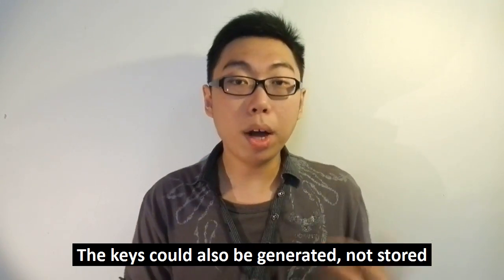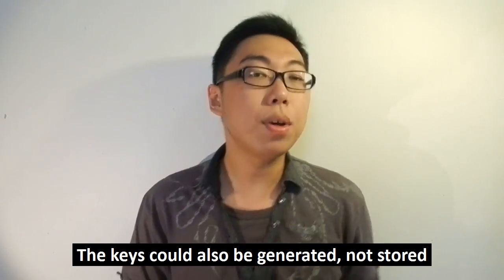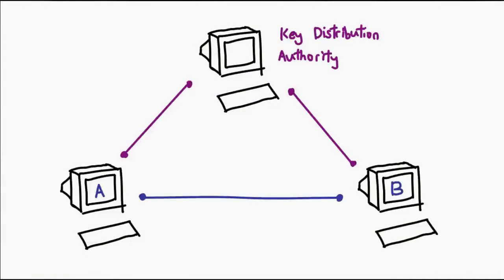Now let's consider some challenges of actually implementing this, first addressing the elephant in the room: how do you convey the key from one point to another? In our example, point A and point B already know what the key is. However, speaking practically, this information also needs to be conveyed somehow. One proposed solution is to have a key distribution center — a trusted party that stores all the keys everyone is going to use. If A wanted to send something to B, they'd go to the key distribution center and say, 'I'm A and I want to send stuff to B, give me a key that will work for this situation.'